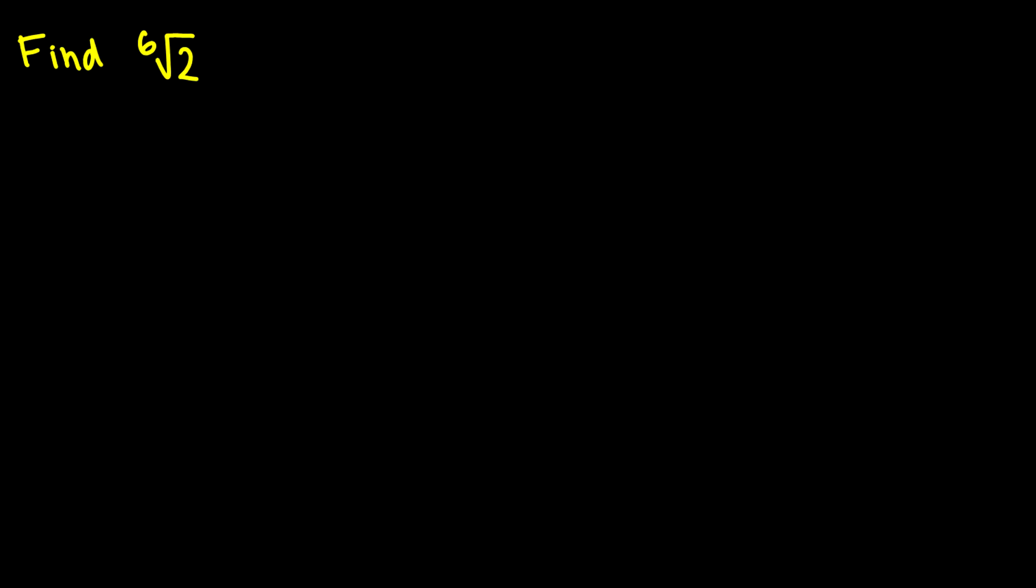So we want to find what the sixth root of two is. This is the same thing as saying, well, let's let x equal the sixth root of two. Then we can say that x^6 is equal to 2, so x^6 - 2 is equal to zero. And now we can do something to solve this equation because we are now solving for a root, just what the method is for.